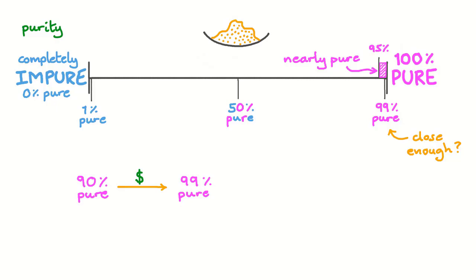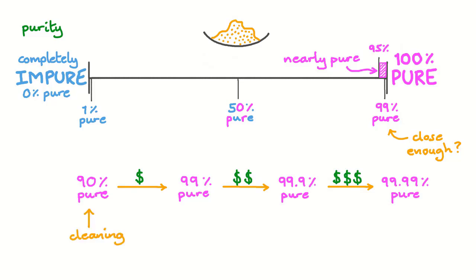Making a relatively pure chemical is sometimes not that expensive, but making chemicals really pure can be much, much more expensive. Sometimes low purity products are okay for certain applications like cleaning. But for some applications, even the smallest amount of impurity can make a sample completely useless. For example, if we had medicine that was only 99% pure and we didn't know what the other 1% was, it might not be safe to take the medicine. Typically in the lab, we'll use chemicals that are in between these two extremes of purity.